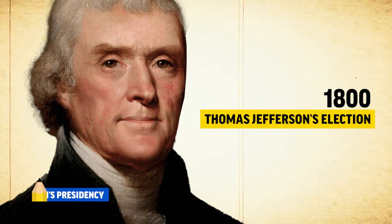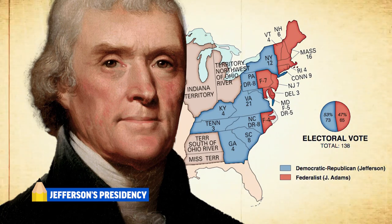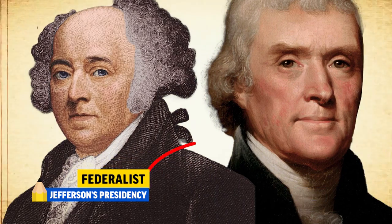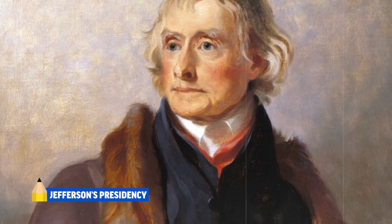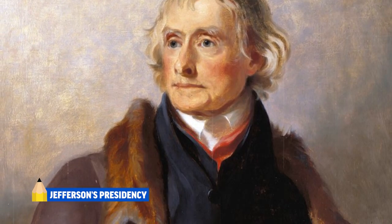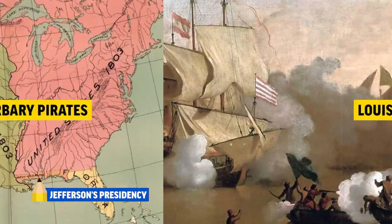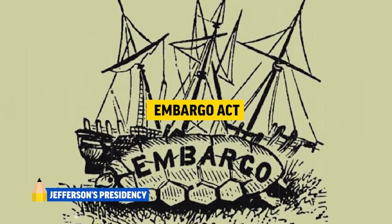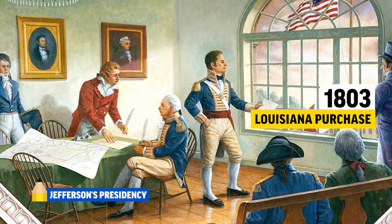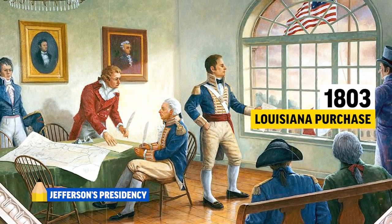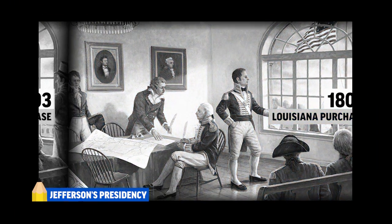Thomas Jefferson's election is called the Revolution of 1800 because it's the first peaceful transfer of power from one party to the next for the young nation. Jefferson faced several foreign policy challenges as president, including the Louisiana Purchase, the Barbary Pirates, and the Embargo Act. Jefferson was conflicted on the Louisiana Purchase because the Constitution did not strictly give the president the power to purchase the territory.